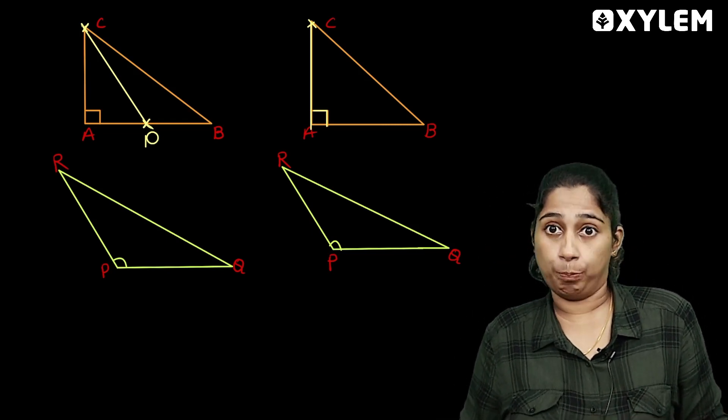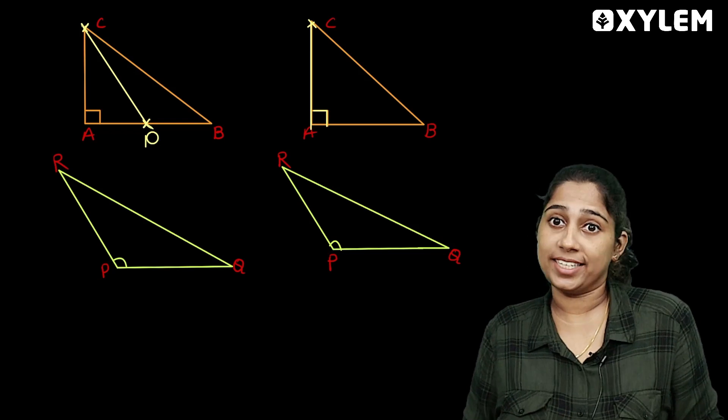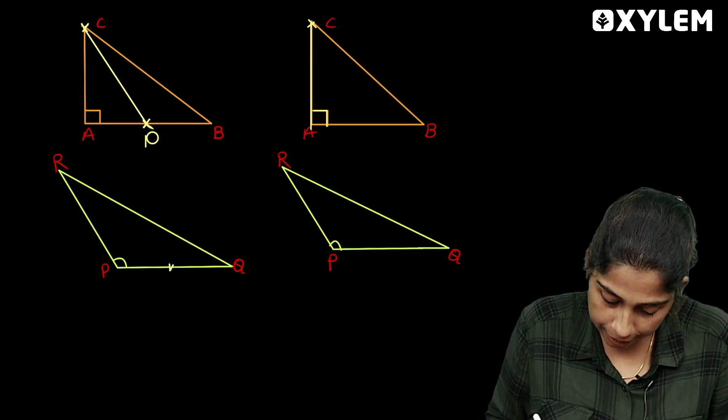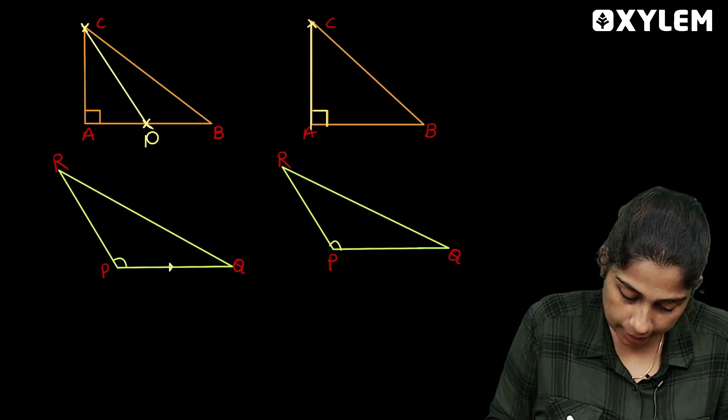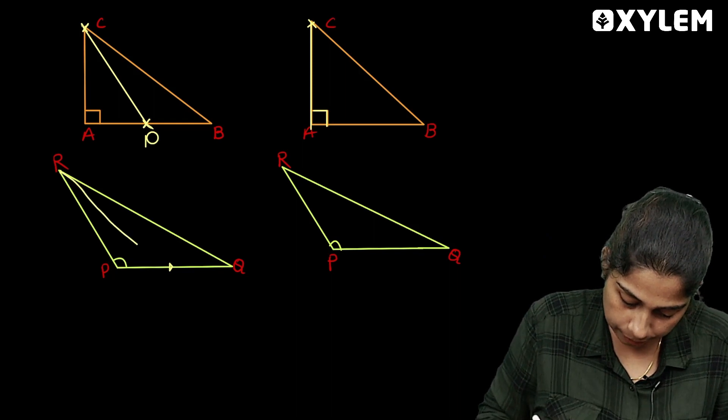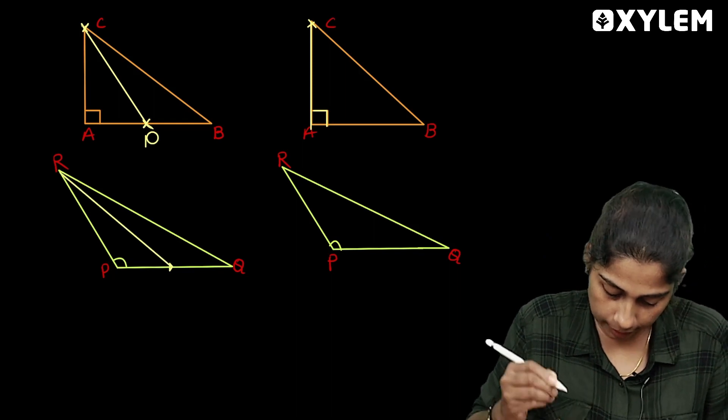Now this is an obtuse-angled triangle. If we have a midpoint, we will join the line in the middle of the triangle.